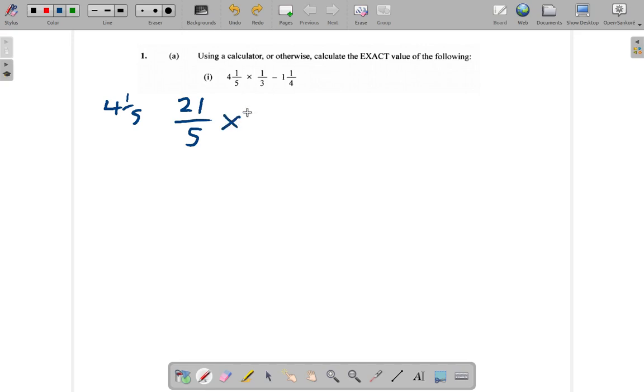And you multiply by 1 third. So, here, you can do your multiplication directly, but I realize that you could cancel down and get some smaller numbers. We're not going to touch the minus 1 and 1 quarter just yet. Let's leave it out for a minute.